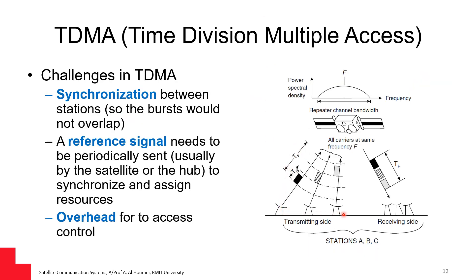In a TDMA example, three transmitters each send a frame, and these frames are collected at the satellite and transmitted back to the receivers. Similar to FDMA, we have guard time so that frames do not overlap and cause interference. For TDMA to work properly, you need a reference signal that synchronizes the transmitters — they need to know when to transmit and for how long — which adds overhead control signaling to the overall system.